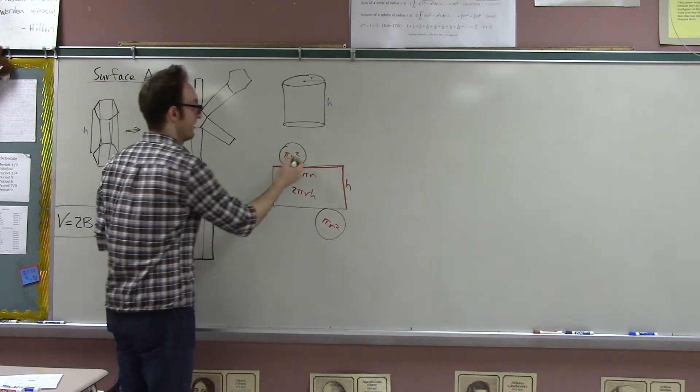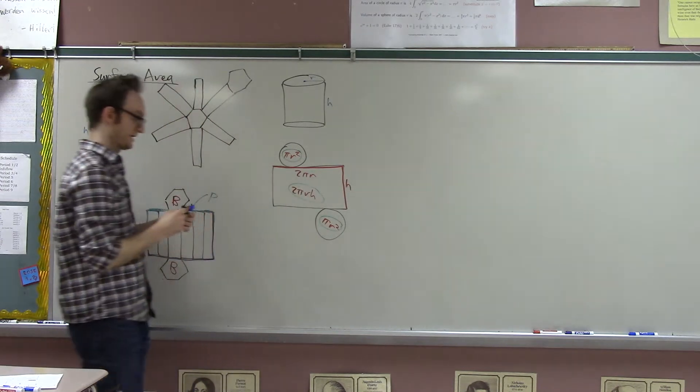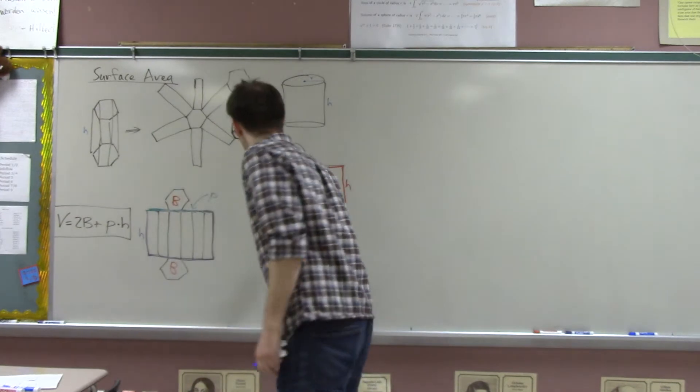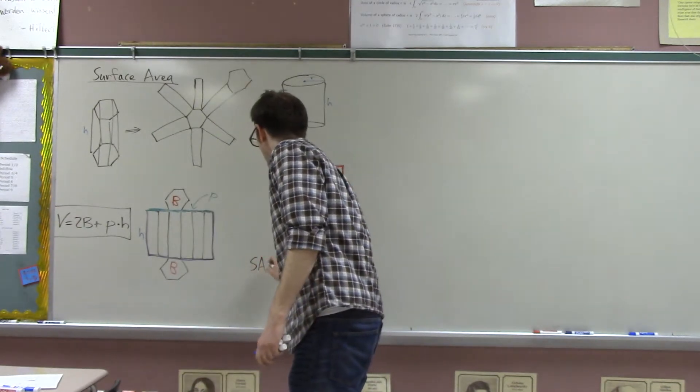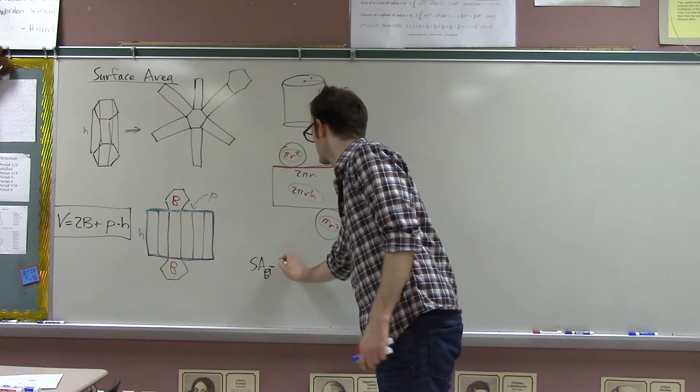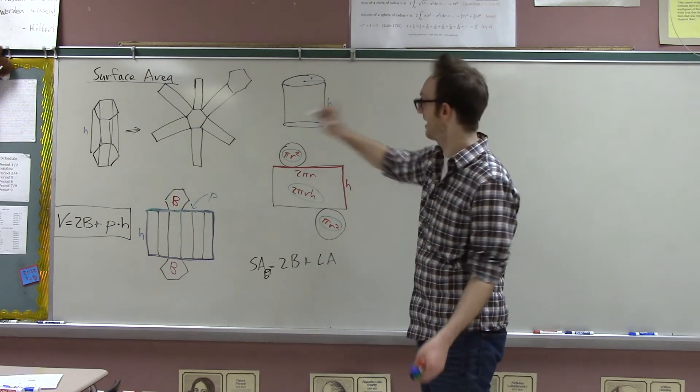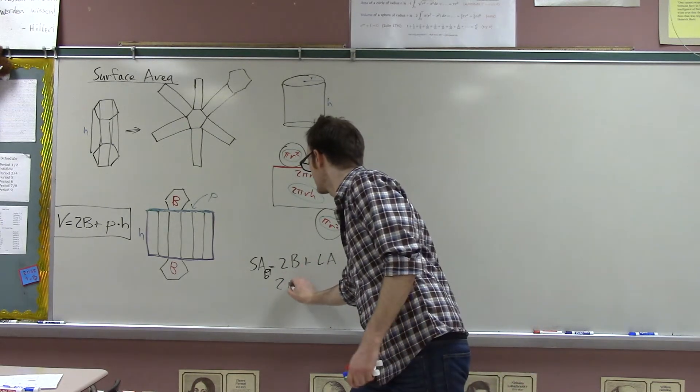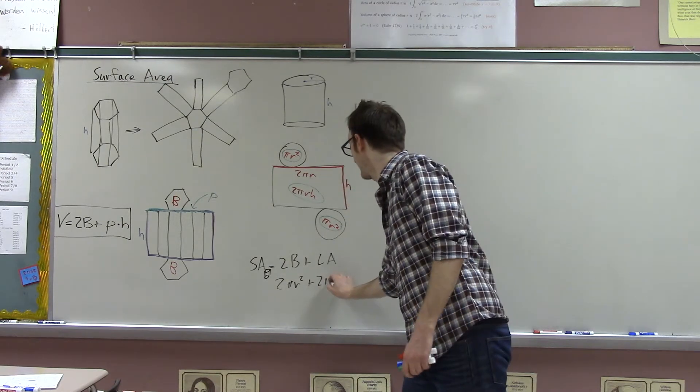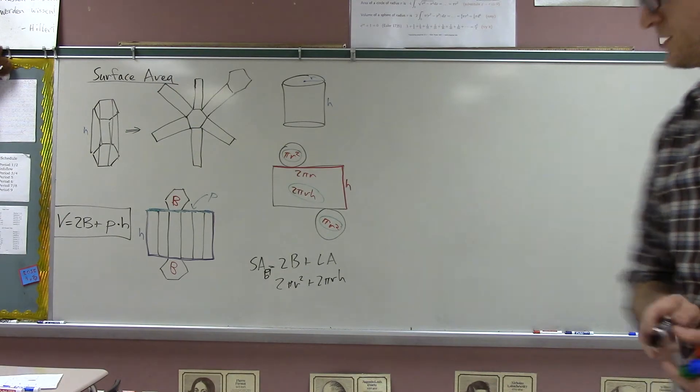So I have pi r squared, I have another pi r squared, and I have another 2 pi r h. So the surface area of a cylinder is really twice the base plus the so-called lateral area, the area on the side. And the area of the base is just pi r squared, and the lateral area is just 2 pi r h. So that's the formula for the surface area of a cylinder.